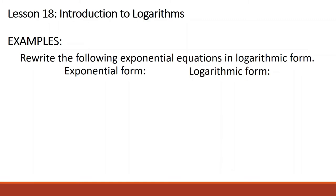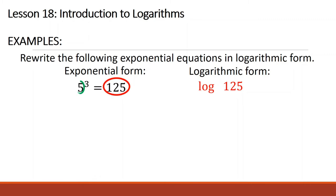Here are some more examples. Let us rewrite the following exponential equations in logarithmic form. First, 5 raised to 3 is equal to 125. In logarithmic form, we first read 125 as the value a, so we write logarithm of 125. The base is 5, so logarithm of 125 base 5. It equals the exponent, which is 3. Next, 7 raised to negative 2 is equal to 1 over 49. In logarithmic form, this is logarithm of 1 over 49, base 7, is equal to negative 2.